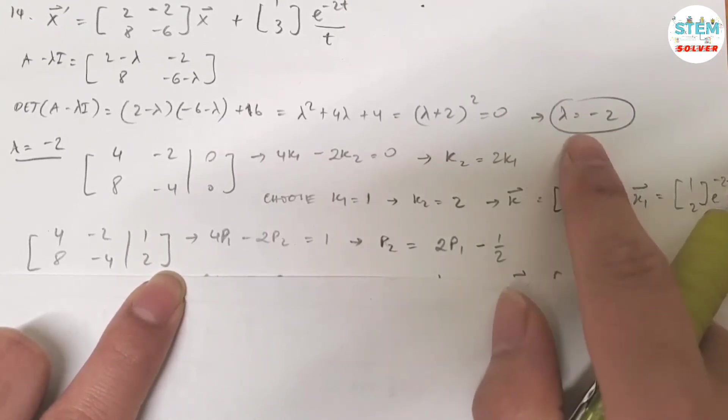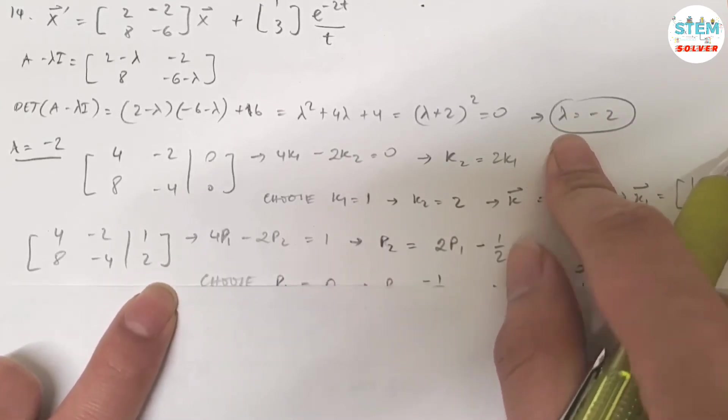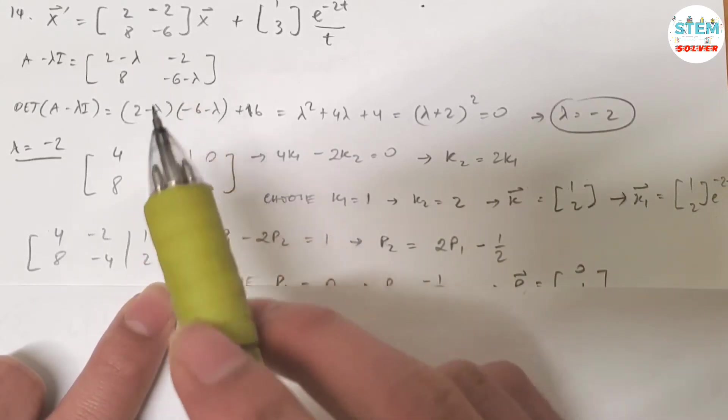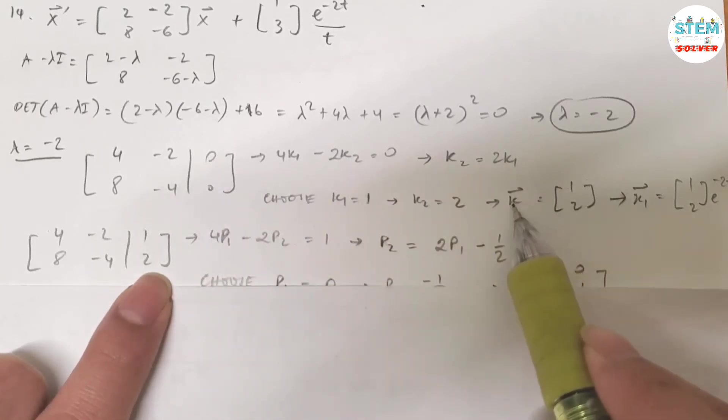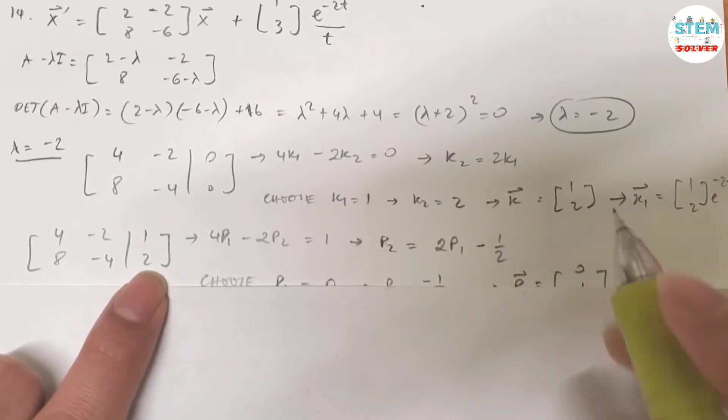Now since you have one lambda, how do you get the other eigenvector? Once you plug it into this one, you get a matrix. First, you augment it with 0, you will get vector k. After that, you build the same matrix, but you augment with the matrix you just found, which is vector k, to get your second vector.